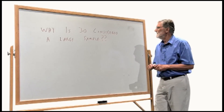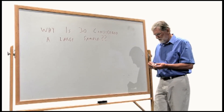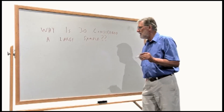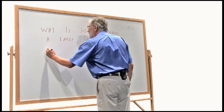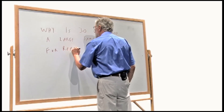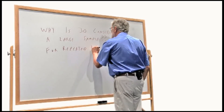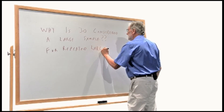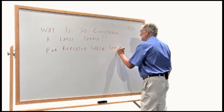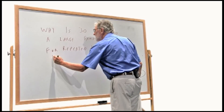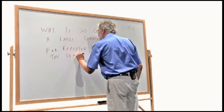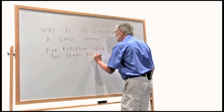Now why is this? Well, if you've been watching these diatribes, you may remember that I said that for repeated large samples, the sample average will follow the bell-shaped curve.